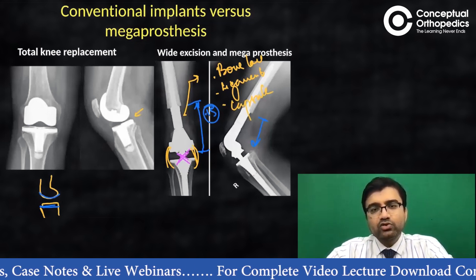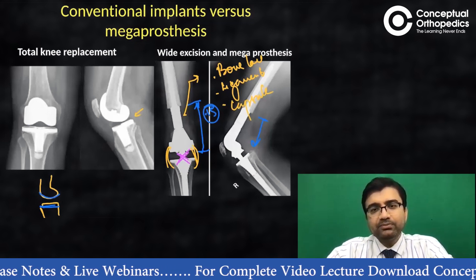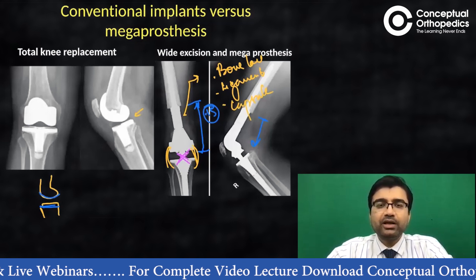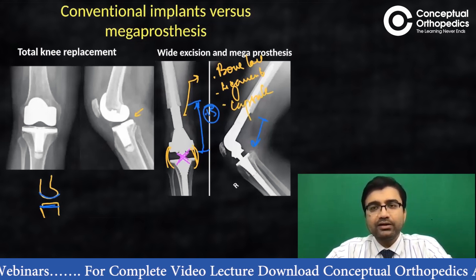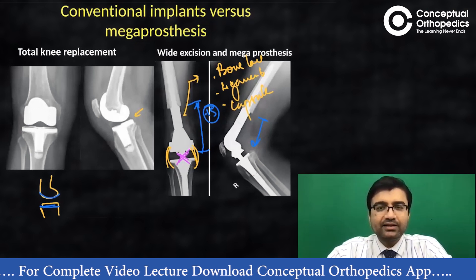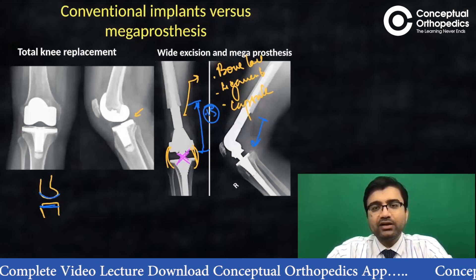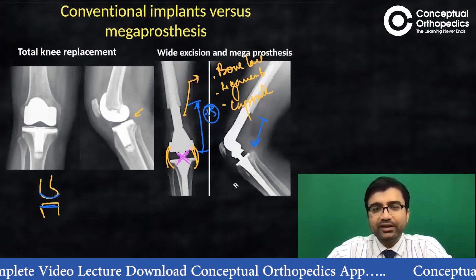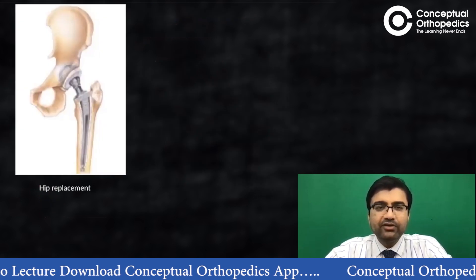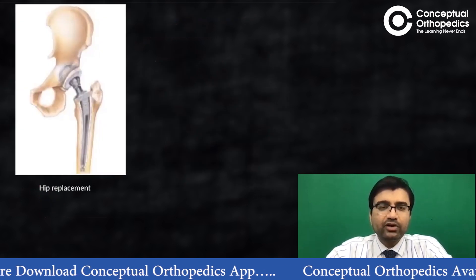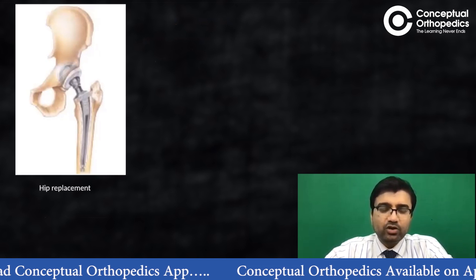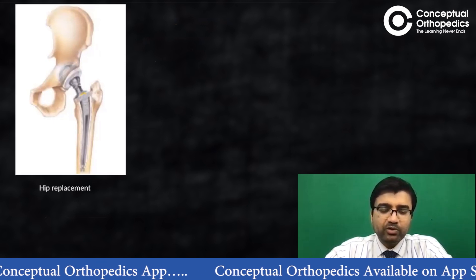Tumor prostheses represent just one end of the spectrum. In between, you may have some ligament-sparing or enhancing types of implants, semi-constrained implants, and then finally the fully constrained implants.